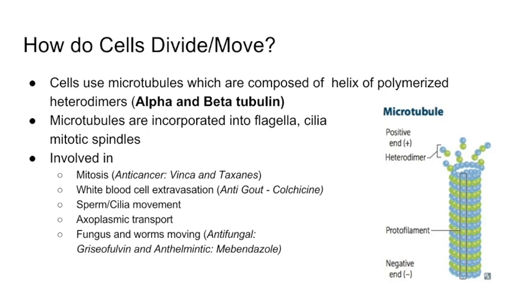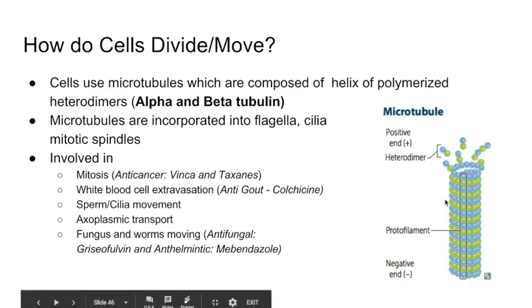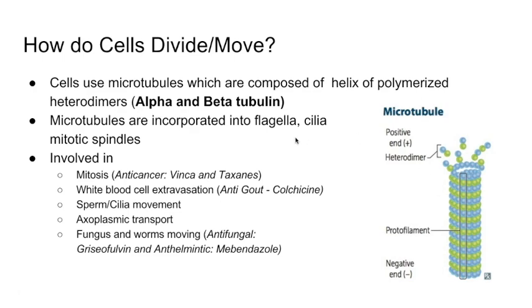I want to give a little background on how cells divide and move, because this is a high-yield topic that comes into other pharmacology sections and biochemistry. Cells use microtubules, which are composed of a helix of alpha and beta tubulin. One alpha and one beta tubulin come together as heterodimers, and these heterodimers polymerize to make a microtubule. Microtubules are incorporated into flagella, cilia, and mitotic spindles, and based on what they're involved in, we can target that process.